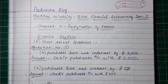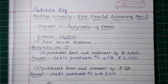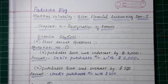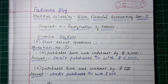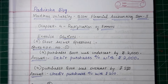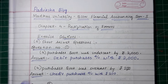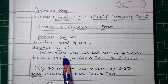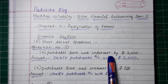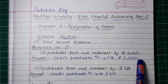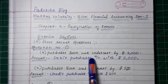In this video, I will solve three short answer questions from the exercise. First question: Purchases book was undercast by Rs. 2,000. So here, undercast means the purchases book has been recorded less than the actual amount.